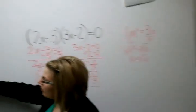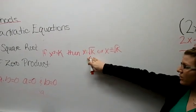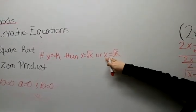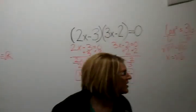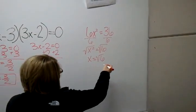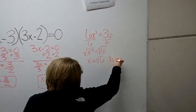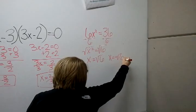But we have to go back to our rule which says that it equals the square root or it also equals the negative square root. So we have to make sure that we also include x equals negative square root of 6.